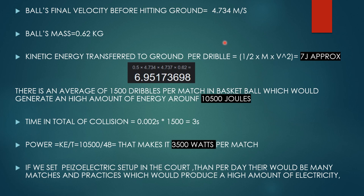So, by putting the value of mass and velocity here, we get the falling energy that is 7 Joules approximately. Now, let us assume that in a match around 1500 dribbles are made. So, total energy of dribbles will be 10,500 Joules. See that a large value.